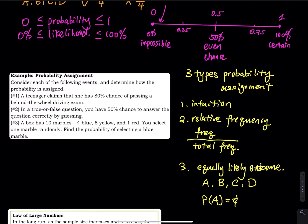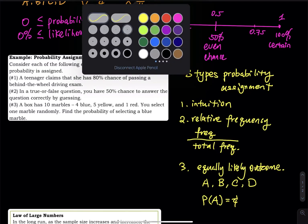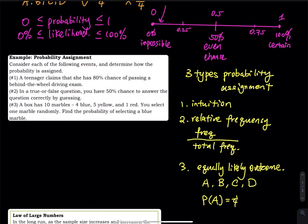Let's take a look at a probability assignment example: consider each of the following events and determine how the probability is assigned. Number one — a teenager claims she has an 80% chance of passing a behind-the-wheel driving exam. That is based on her intuition. Number two — in a true or false question, you have a 50% chance to answer correctly by guessing. Since you don't know which is right, the chance you get it right is one half. That is an equally likely outcome.